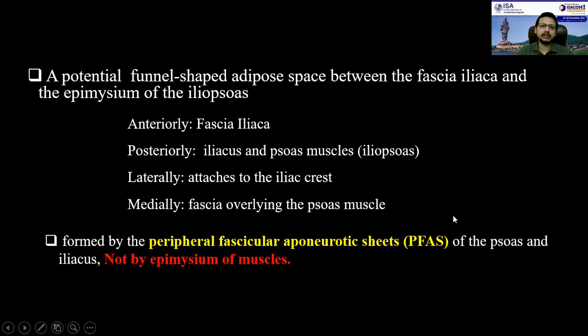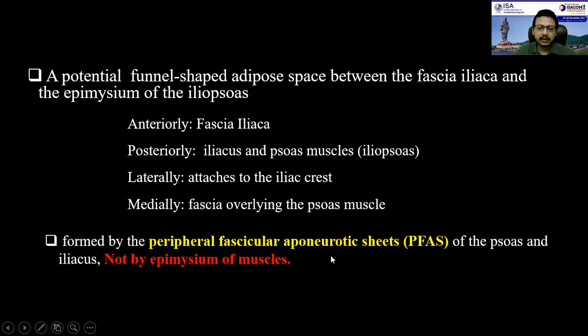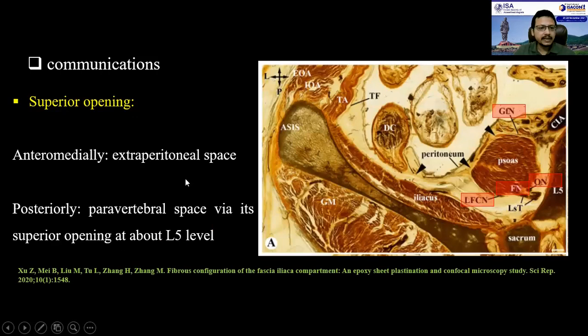So what is the fascia iliaca compartment? It is a potential funnel-shaped adipose space between the fascia iliaca anteriorly and the epimysium of the psoas and iliacus muscles posteriorly. Please note that it is not synonymous with the epimysium. Fascia iliaca is formed by the peripheral fascicular aponeurotic sheets of the psoas and iliacus. Laterally, it is attached to the iliac crest and medially to the fascia overlying the psoas muscle. The fascia iliaca compartment communicates anteromedially with the extraperitoneal space and posteriorly with the paravertebral space via its superior opening at the level of L5.